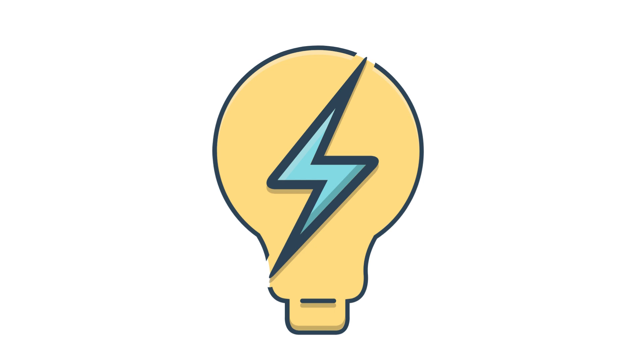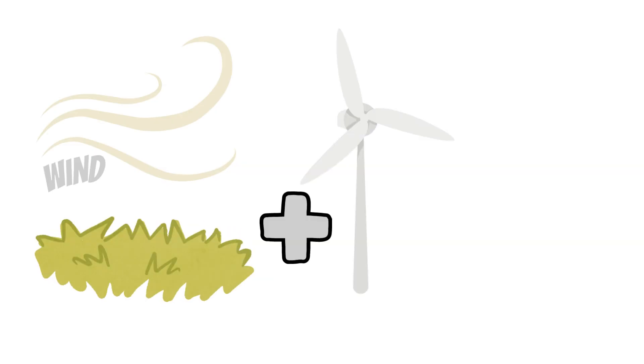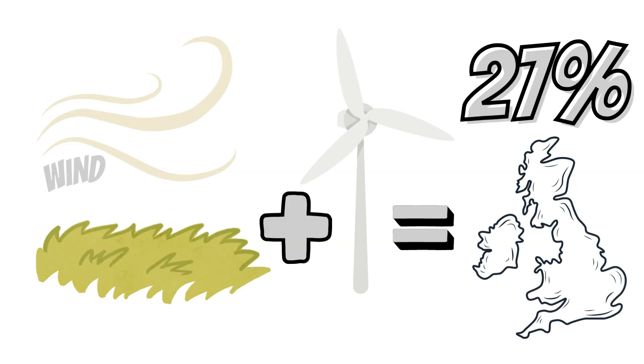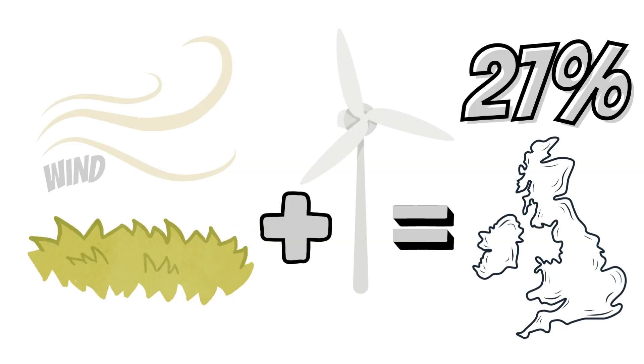Wind is so powerful that we are able to use it to generate close to 27% of the UK's total electricity.